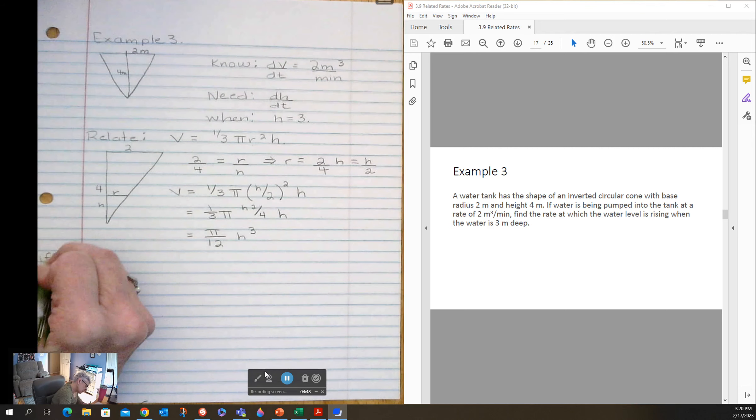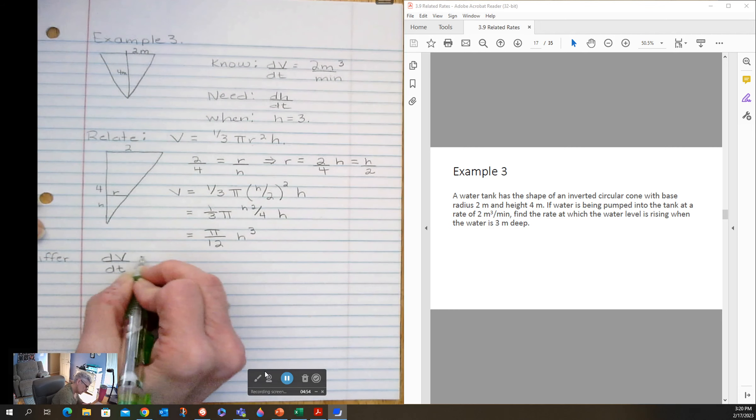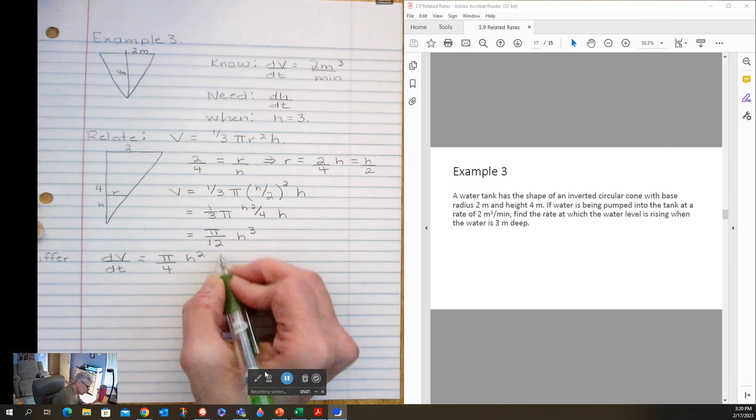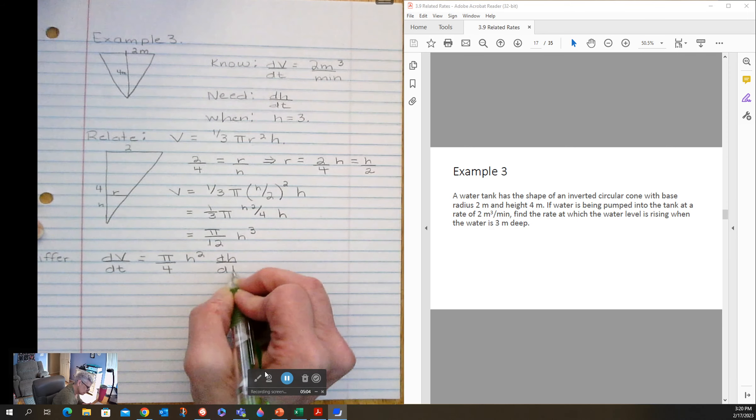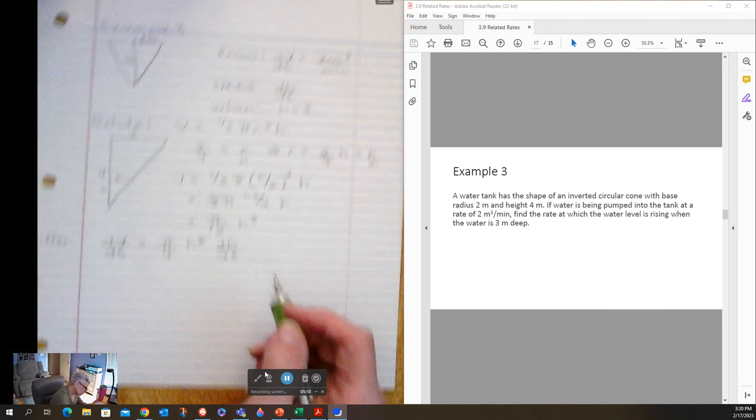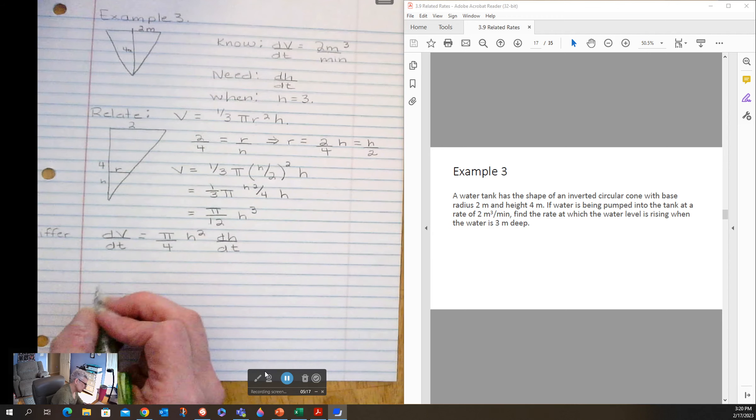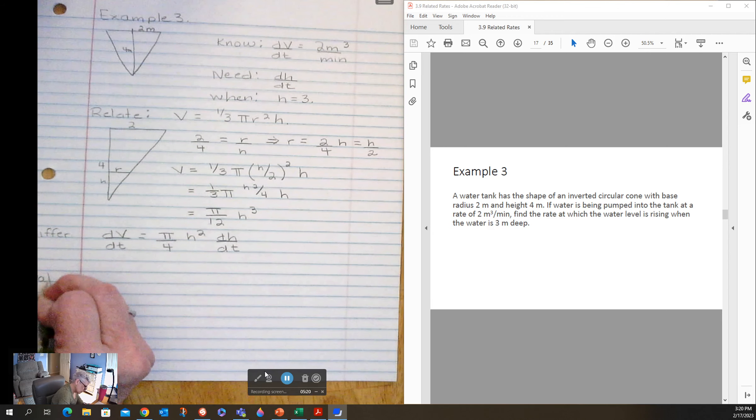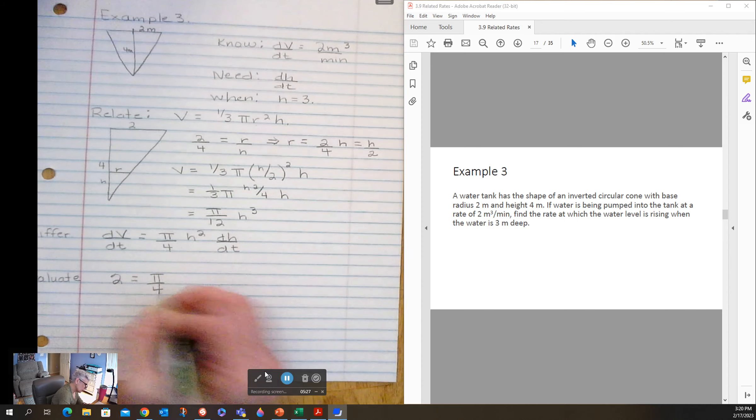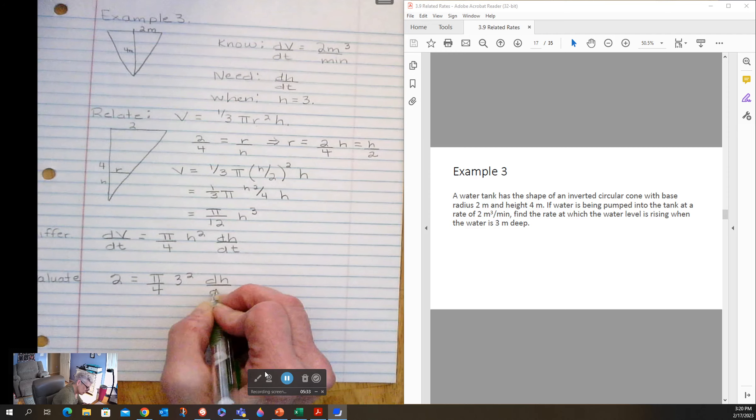I'm ready to differentiate. So dV/dt is equal to—three falls down—pi over four h squared dH/dt. Now I'm ready for when. When h is equal to three and dV/dt is equal to two. So evaluate: two has to be equal to pi over four, h is three, so three squared dH/dt.